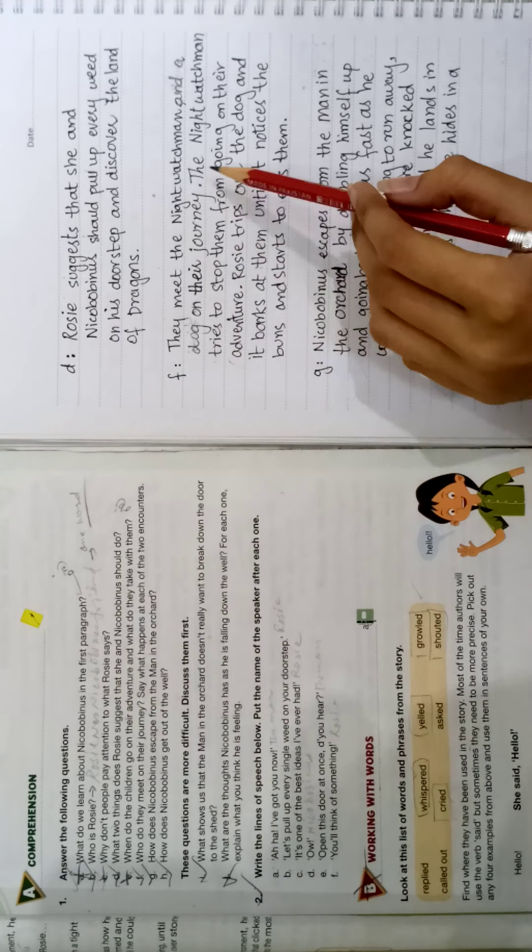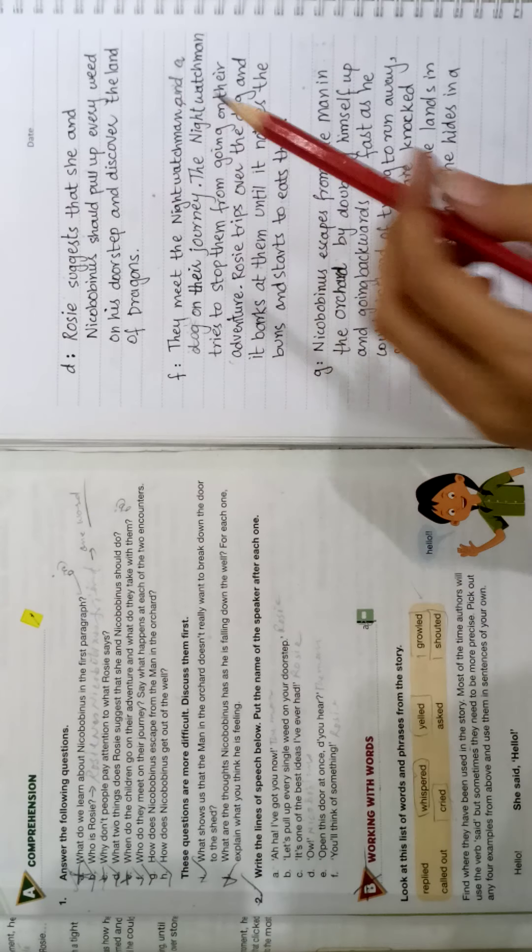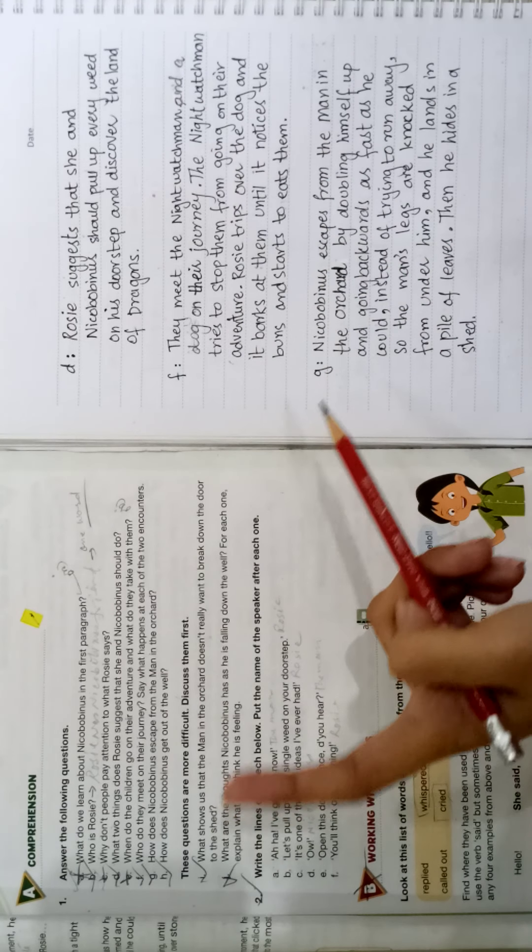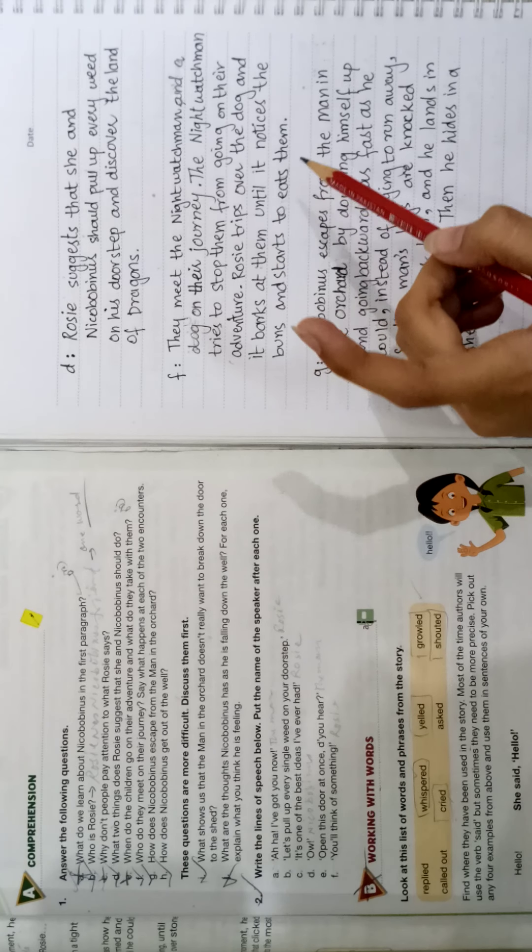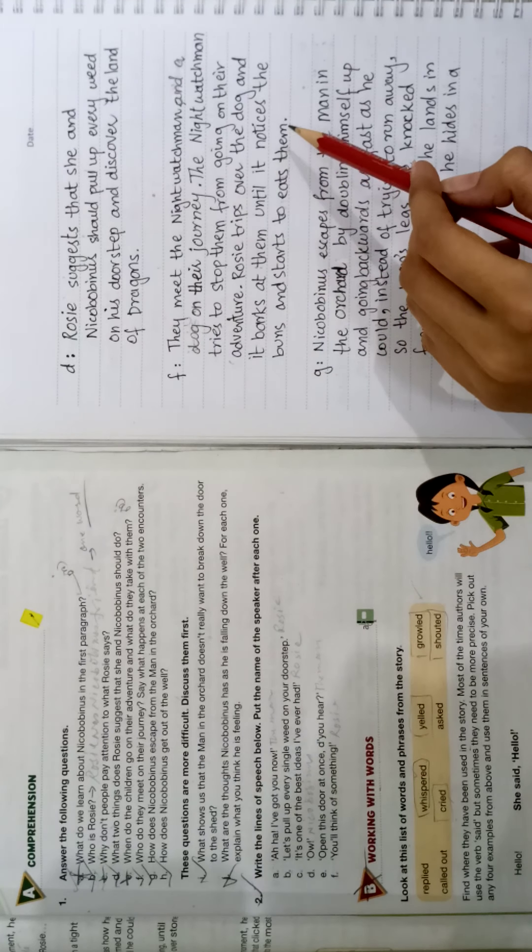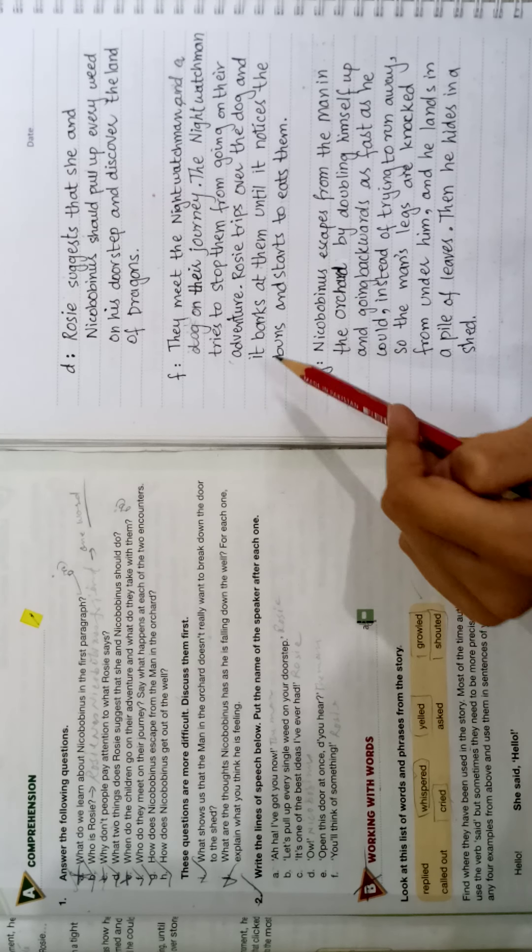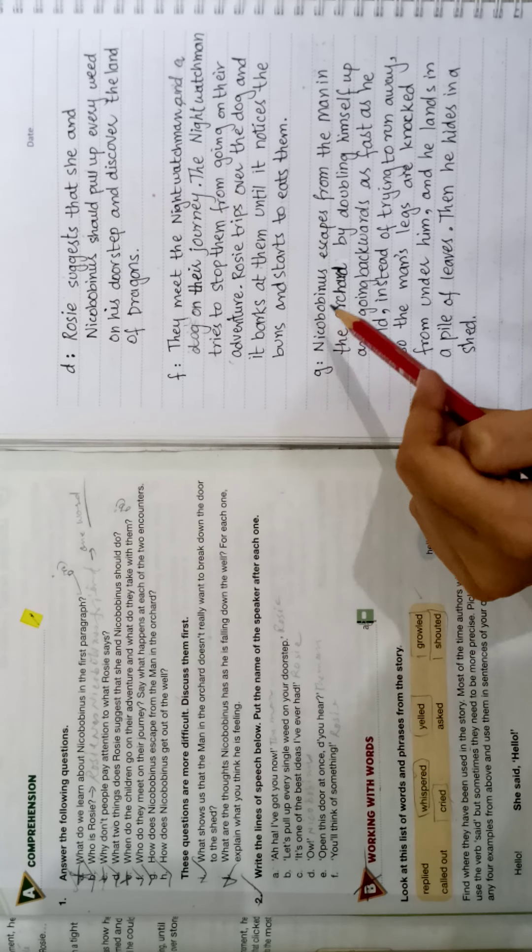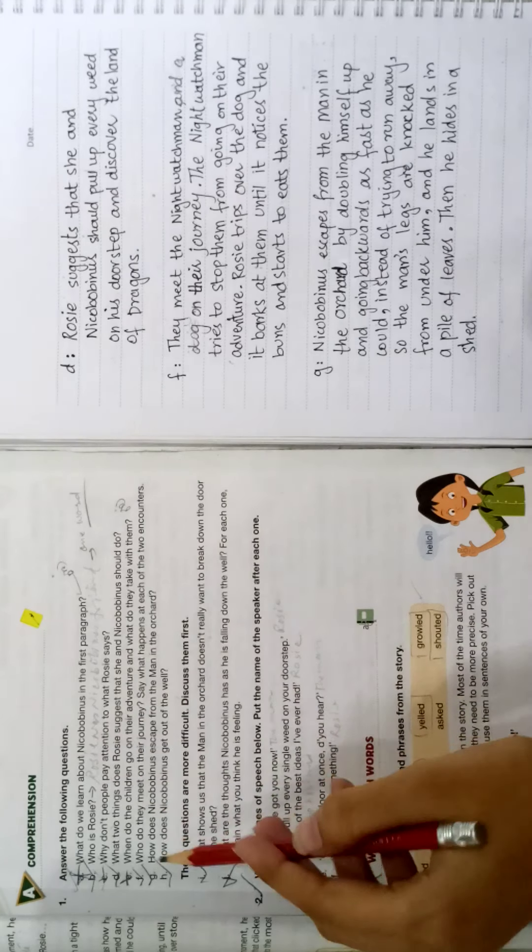Now what happened: Rosie and Nicobobinus, two times night watchman and their dog, they were on their journey and the night watchman tried to stop them from going on their adventure. But what happened was Rosie tripped on the dog and the dog noticed the buns and started eating it.